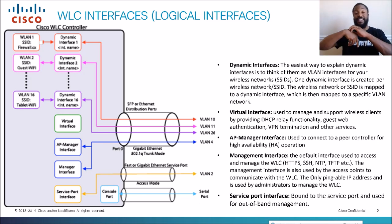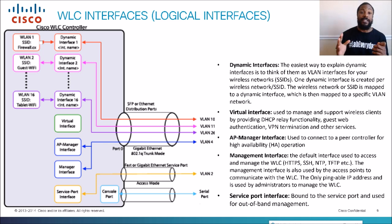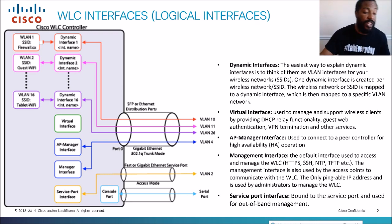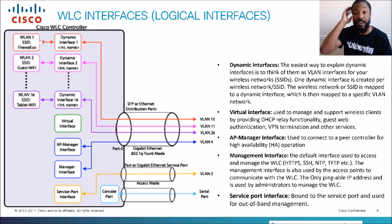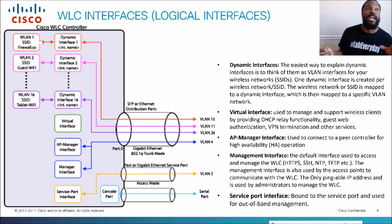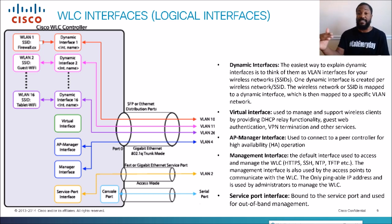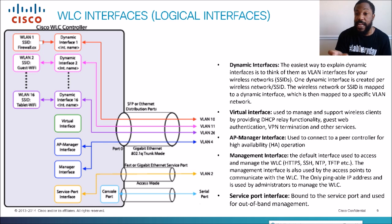Now let's talk about the logical interfaces on a wireless controller. Physical you can touch, logical you can't — it's virtual. A wireless controller has multiple logical interfaces we need to know for the exam. The dynamic interface is the easiest to explain — think of it as a VLAN interface for your SSIDs. An SSID is a Service Set Identifier, basically the logical network name — the Wi-Fi network names you see on your phone. We map SSIDs to VLANs using a dynamic interface.